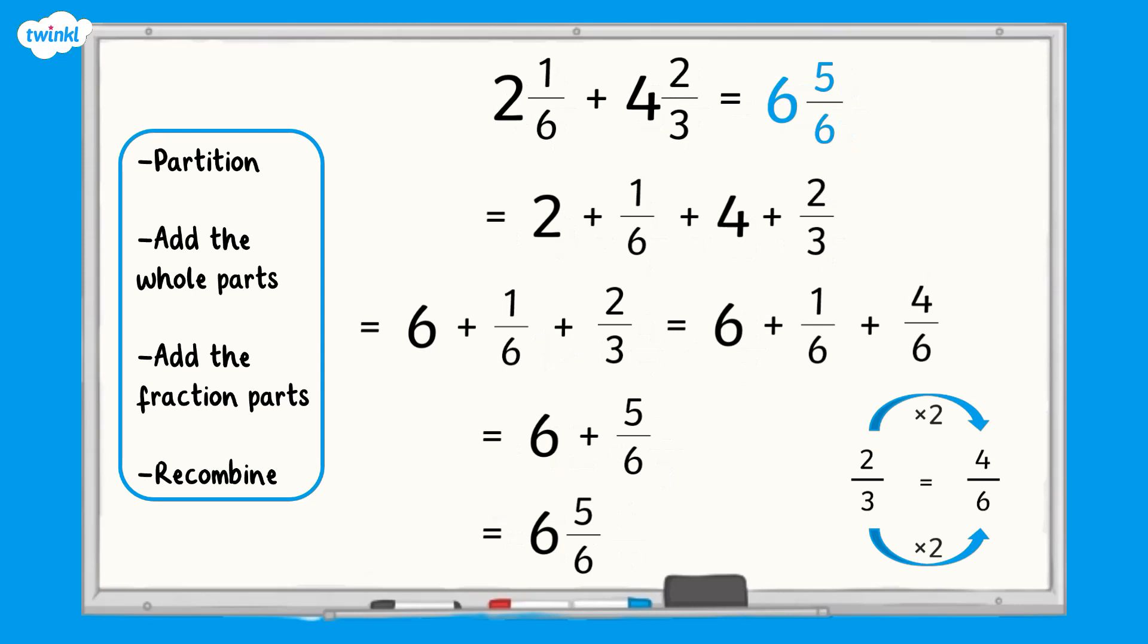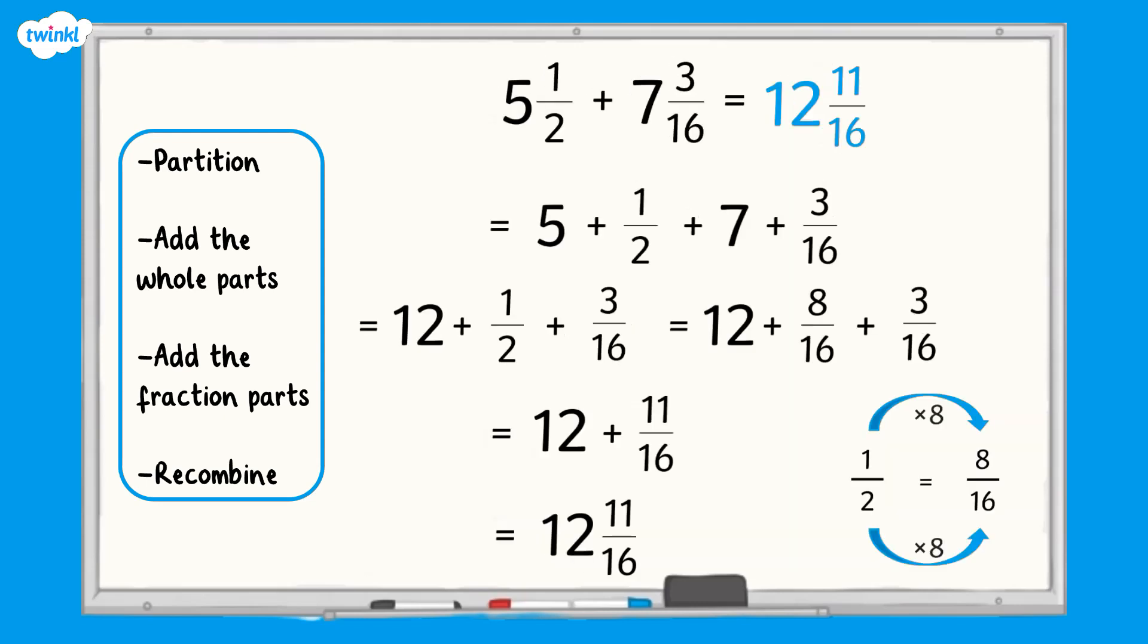Two and one-sixths add four and two-thirds equals six and five-sixths. Five and a half add seven and three-sixteenths equals twelve and eleven-sixteenths.